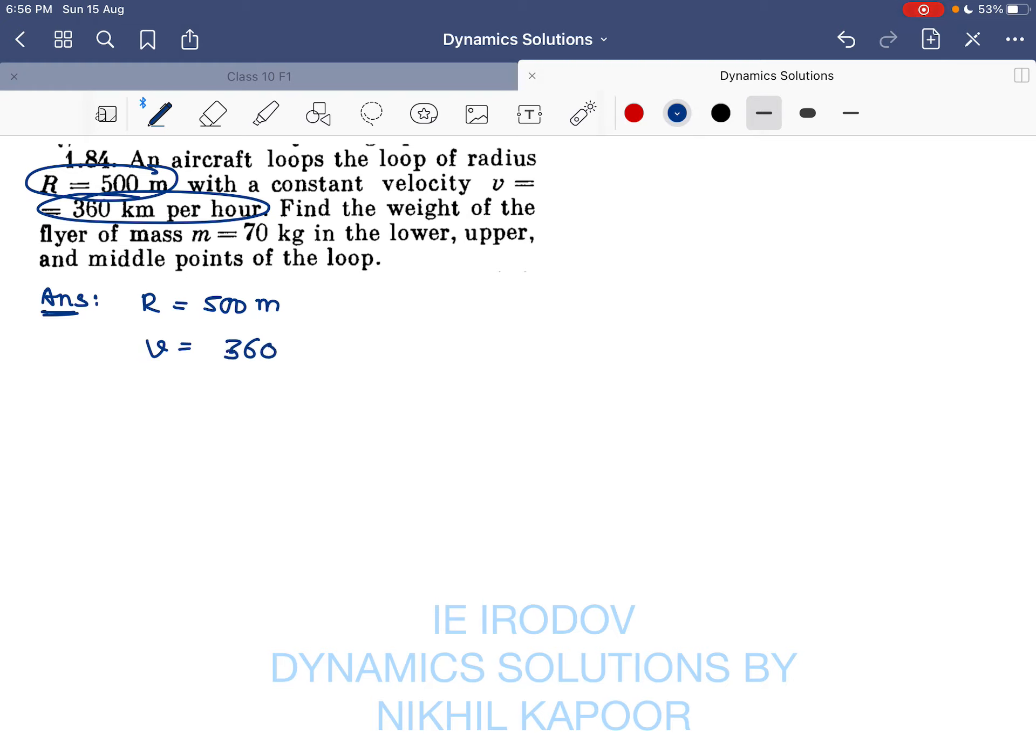So radius is 500 meter. The velocity is 360 km per hour. We should convert this into meter per second by multiplying by 5 by 18. 18 ones are 18, twos are 36, so velocity comes out to be 100 meter per second.